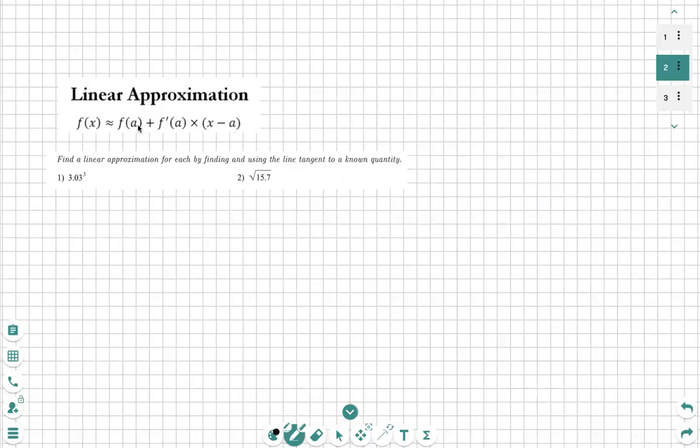First, we start with our f of x. We are going to want to plug the value of approximation, value of a, find f prime of that approximation, and multiply that times the x value we are looking for, minus a. Alright, so let's jump straight into it.